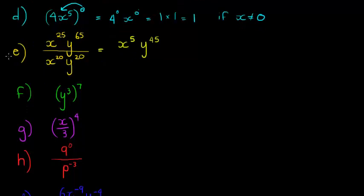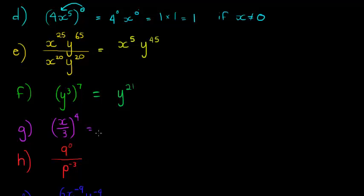This next one uses the power-to-a-power rule: when you have a base and exponent that itself has a power, you multiply the exponents. So this gives y to the power of 21, and that's the simplest it can go.